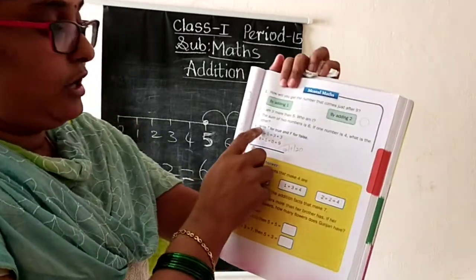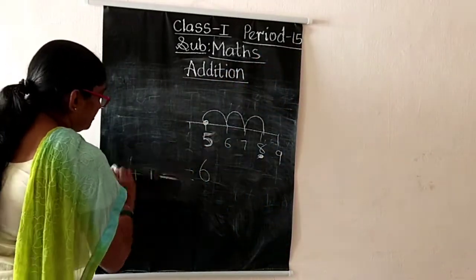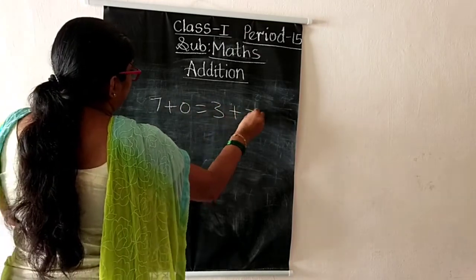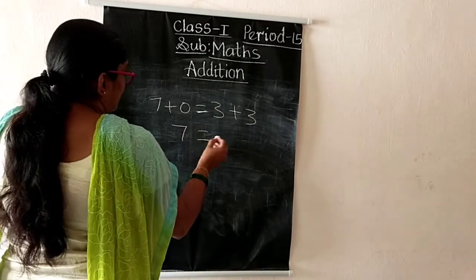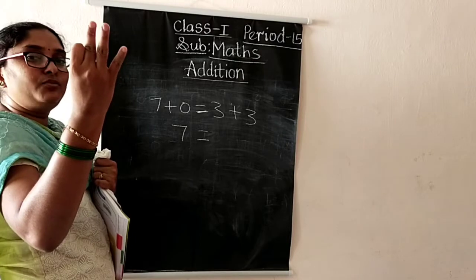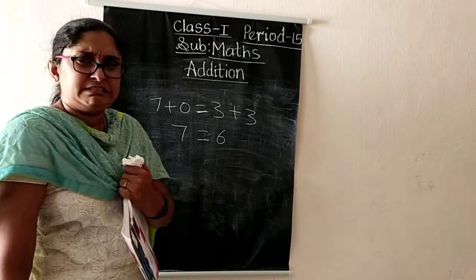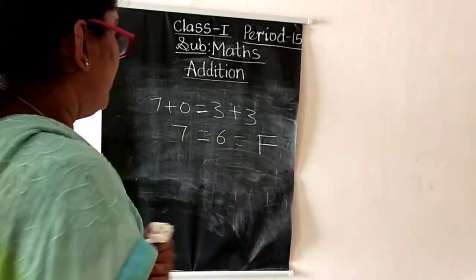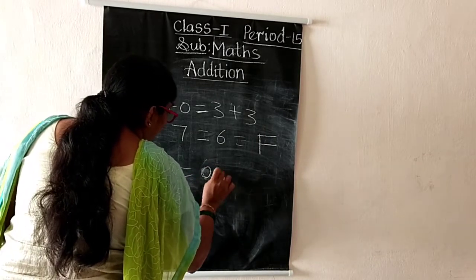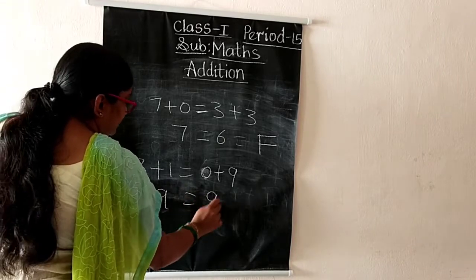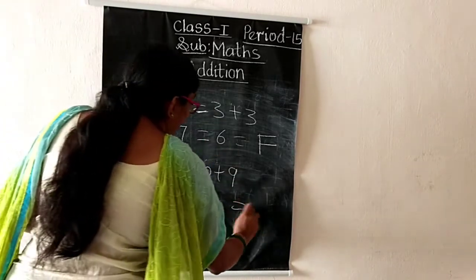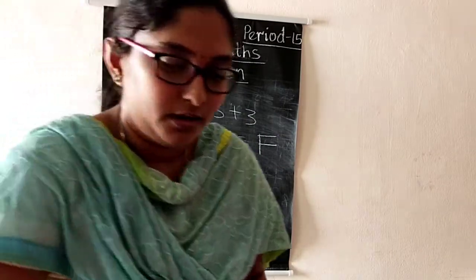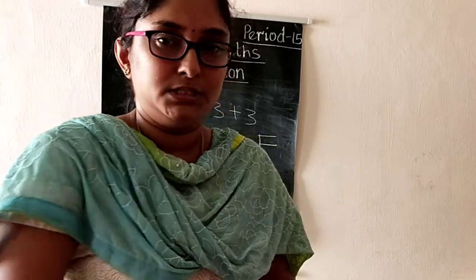Write True or False — T for True, F for False. Seven plus zero equals three plus three? Seven plus zero equals seven; three plus three equals six. Seven does not equal six, so this is False. Eight plus one equals zero plus nine? Eight plus one equals nine; zero plus nine equals nine. Nine equals nine — so this is True. Complete this exercise and send a picture to my personal WhatsApp number.